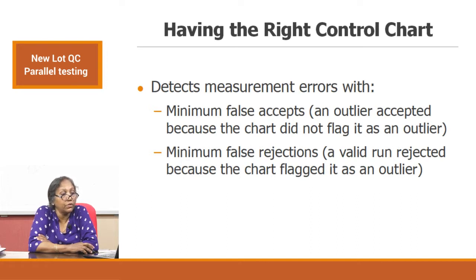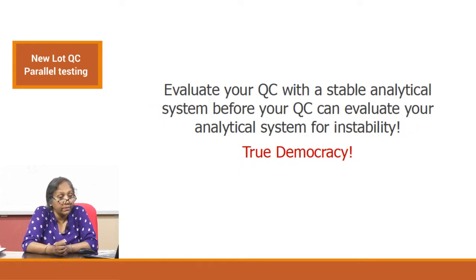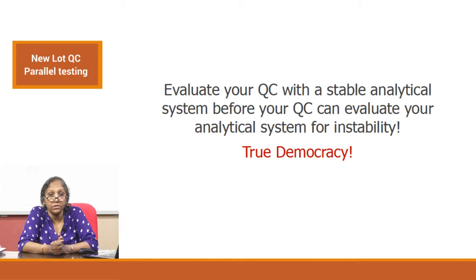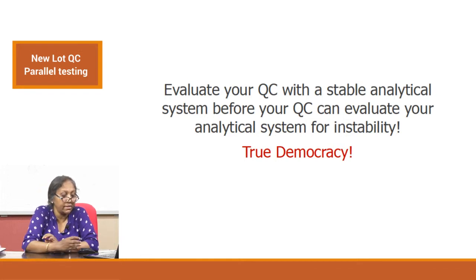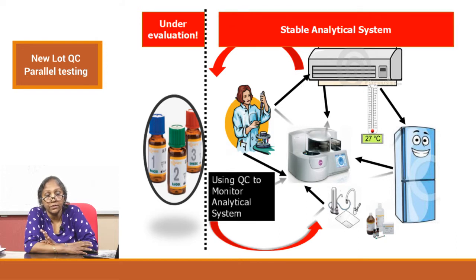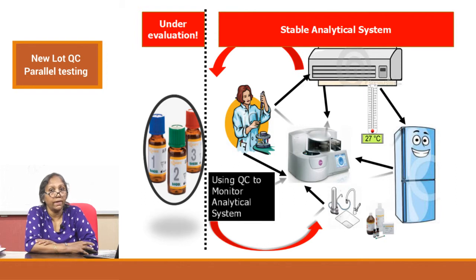In this video, we will talk about the function of parallel testing — how will you evaluate a QC using a stable analytical system? Your QC is under evaluation. Up until now, we were talking about a situation where you use the QC to evaluate a potentially unstable analytical system. Right now, the quality control is under evaluation, therefore you have to ascertain that your analytical system is stable. That is a vital concept in parallel testing.